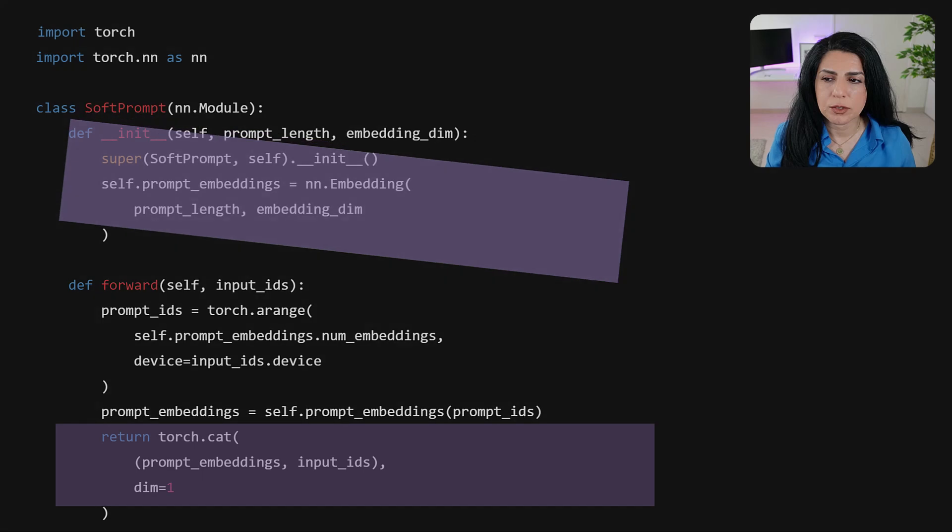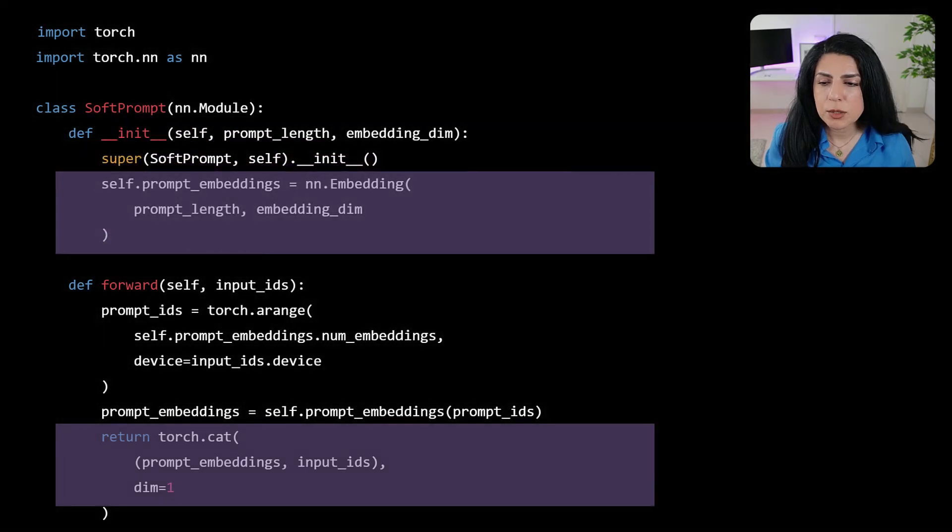Let's take a look at implementation of this in PyTorch. It is super simple. You basically create an embedding layer which is randomly created, and then you concatenate it to your existing input.